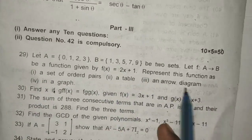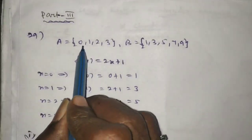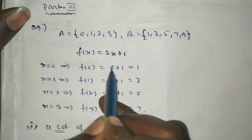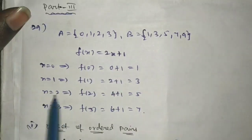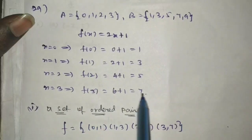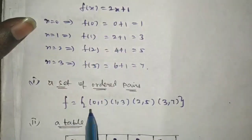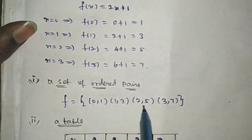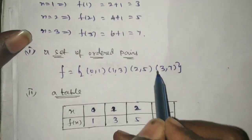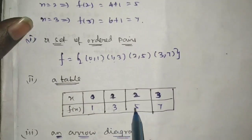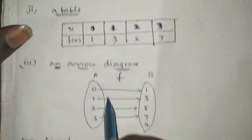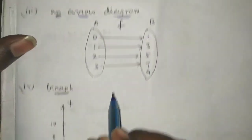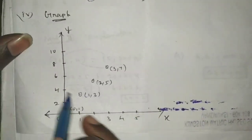The first number is 0, corresponding to subscript 1. Then 1 subscript 3, 2 subscript 5, 3 subscript 7. The ordered pairs are: (0,1), (1,3), (2,5), (3,7). Table: Set A contains 0, 1, 2, 3 and Set B contains 1, 3, 5, 7. Plotting these on the x-axis with 1 unit intervals.